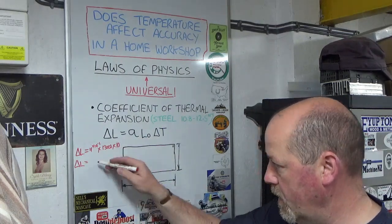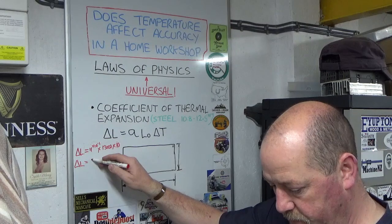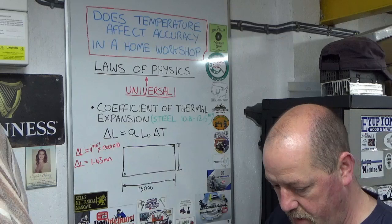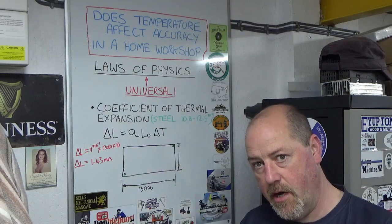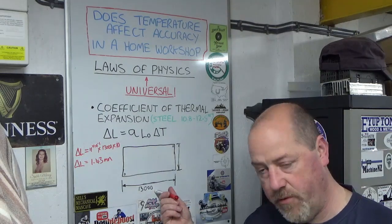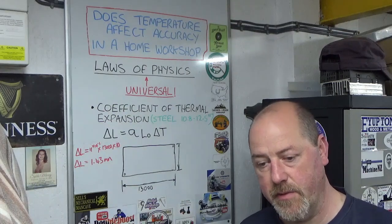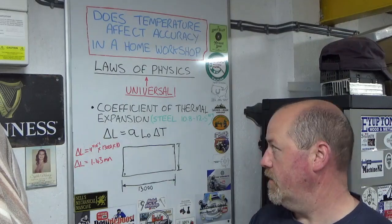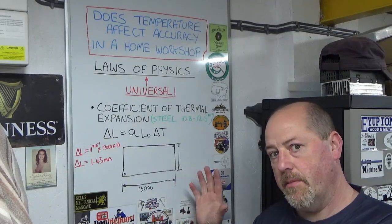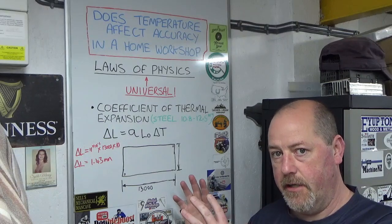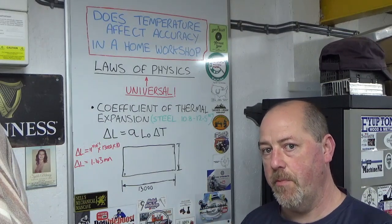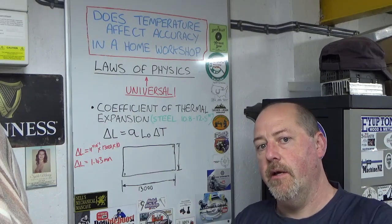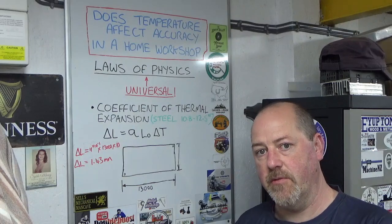And my answer now is 1.43 millimeters, which is about 60 thou over about 42 feet. Which sounds bonkers when you say it like that, but one and a half millimeters is quite a change. So that's all I'm going to do with the maths, just to give you an awareness that on very small parts you can probably get away with it, especially with steels. On aluminums and things like that, obviously the effect is much larger.